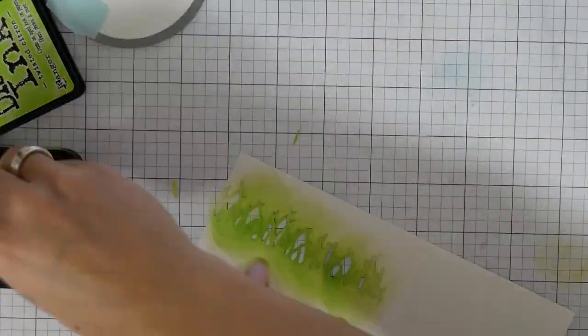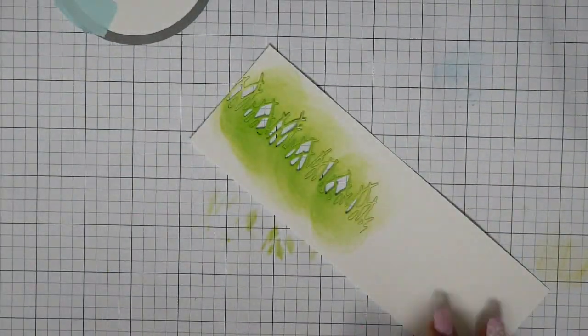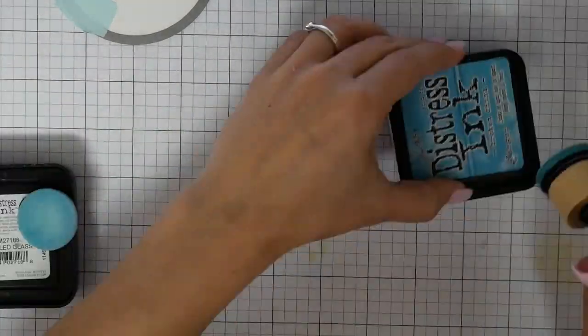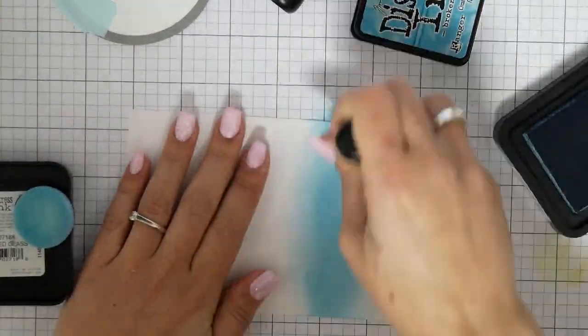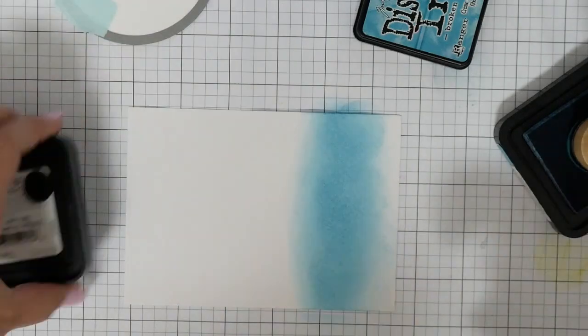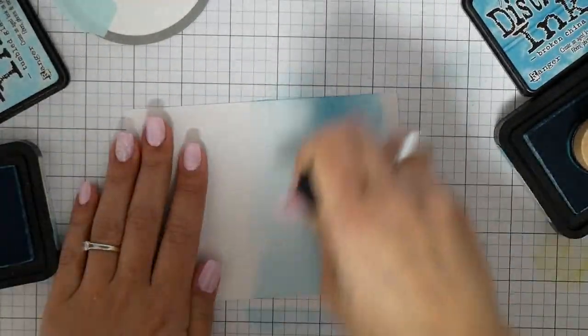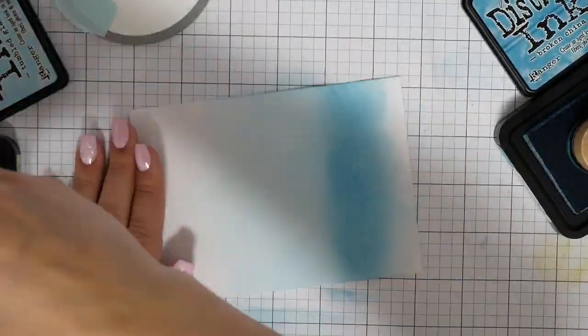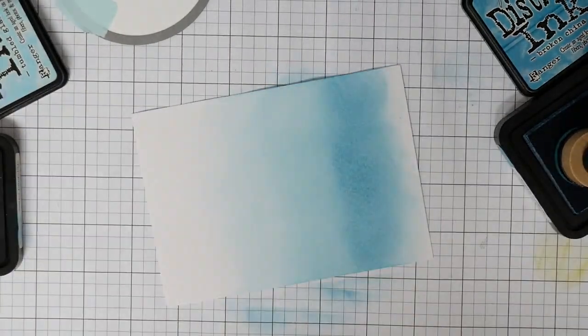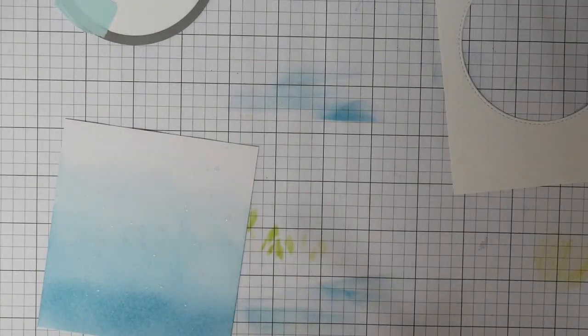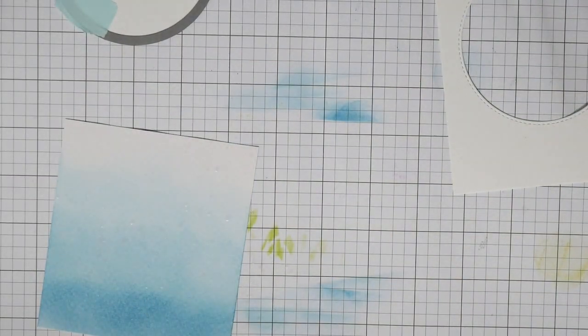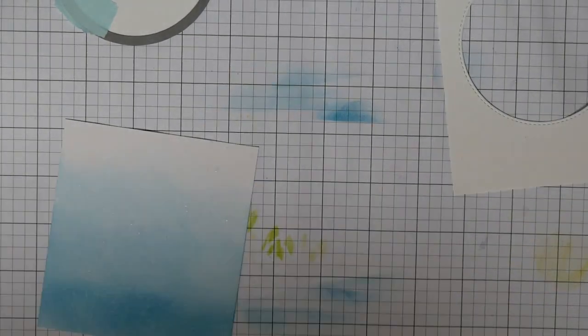Now I did my die cutting. I die cut the grass border from Clearly Besotted also and I distress inked it with Twisted Citron. Now I'm using Broken China distress ink and Tumbled Glass distress ink on some watercolor paper.